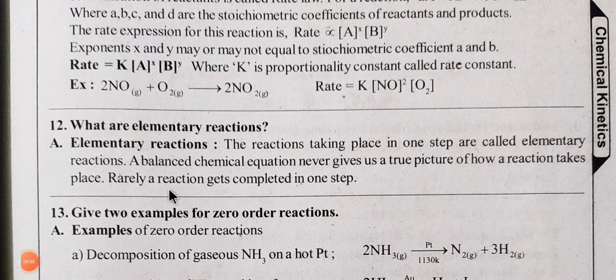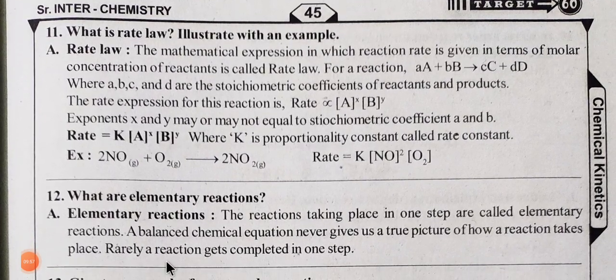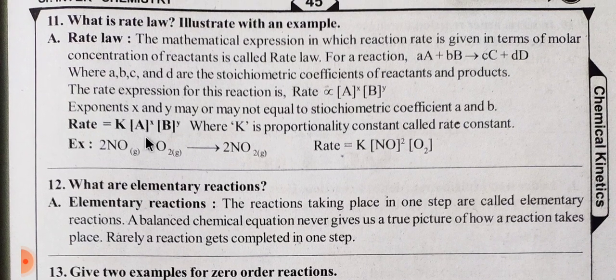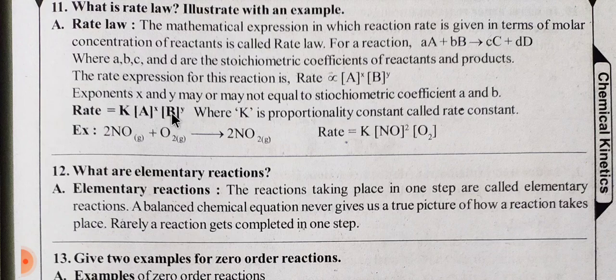Here we have to explain the rate. The rate is given in terms of molar concentration of the reactants. For the reaction aA + bB → cC + dD, the rate is equal to K × [A]^x × [B]^y, where the rate is directly proportional to concentration of A raised to power x and concentration of B raised to power y.